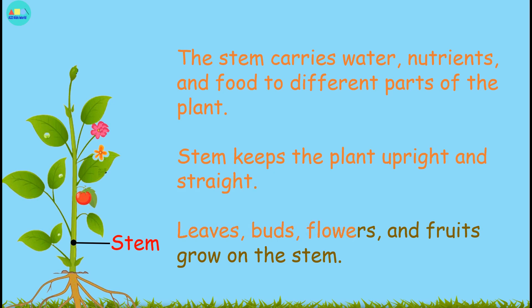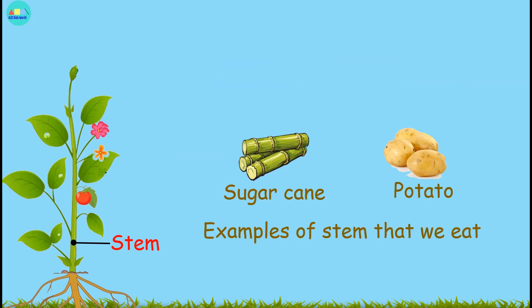Leaves, buds, flowers, and fruits grow on the stem. Sugar cane and potato are examples of stems that we eat.